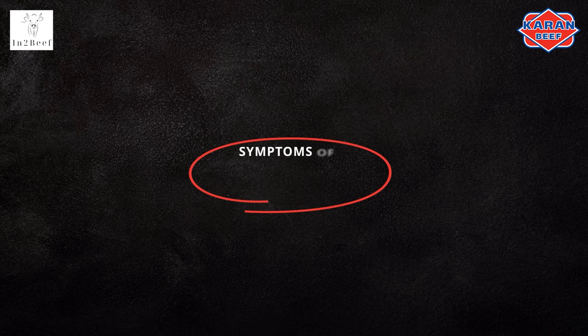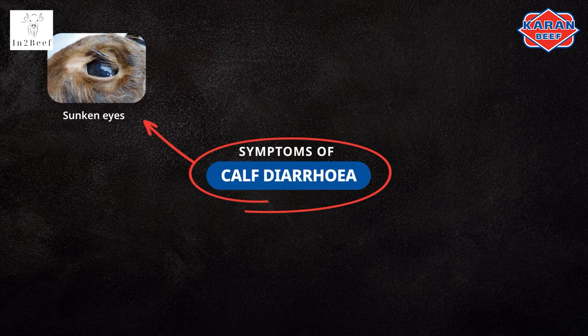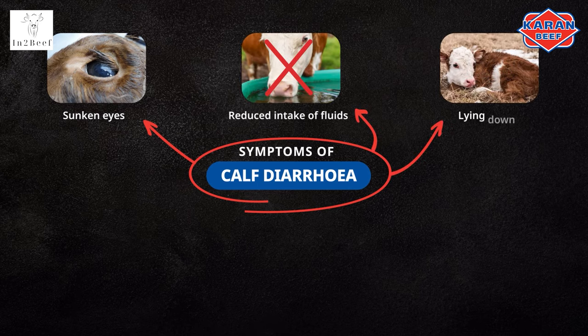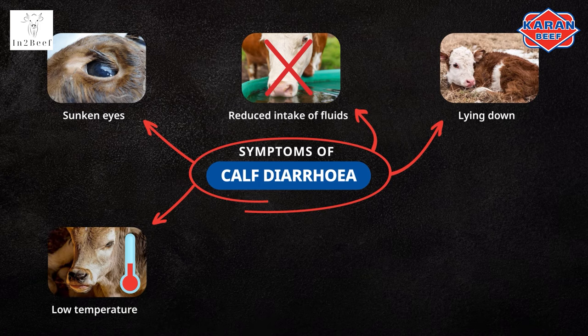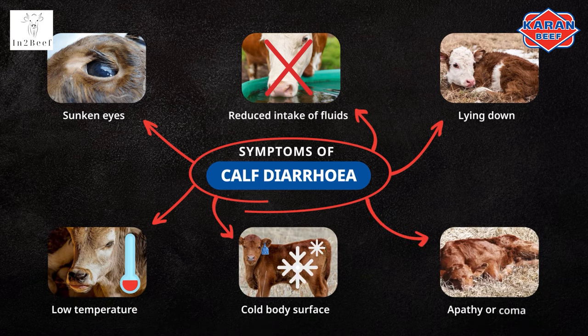To avoid diarrhea in calves, it is primarily essential that the calf is protected from fluid losses. Measures can be taken in advance to protect the newborn calves from diarrhea. The most important symptoms of diarrhea are sunken eyes as an expression of dehydration, reduced intake of fluids, lying down, low temperature, cold body surface, and apathy or even coma.